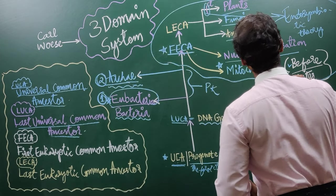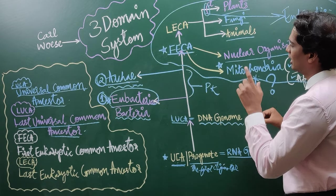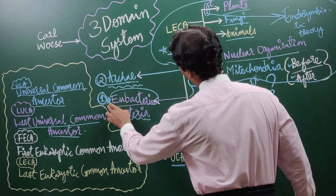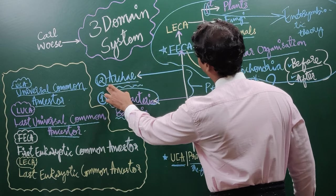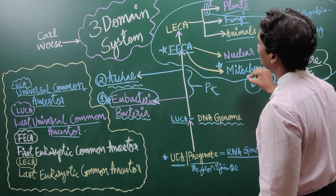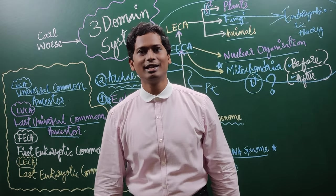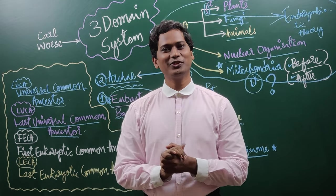And this whole thing is eukaryote. These are the three domains. First domain is eubacteria. Second domain is archaea. Third domain is all eukaryotes. This was the three domain system which was proposed by Carl Woese. Thank you.